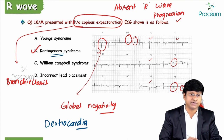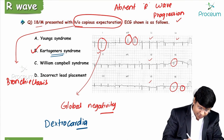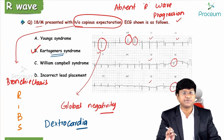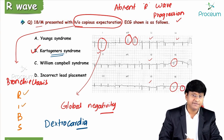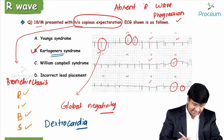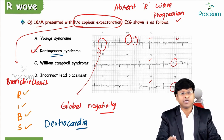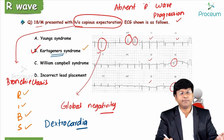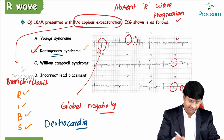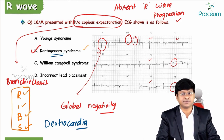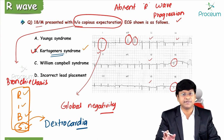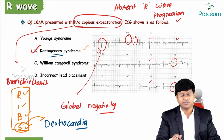Components of Kartagener's syndrome — mnemonic RIBS: R = Rhinosinusitis, I = Infertility, B = Bronchiectasis, S = Situs inversus. Situs inversus is nothing but dextrocardia. Criteria for dextrocardia on ECG: right axis deviation, positive QRS complex in AVR (dominant R wave), global negativity in lead I, and absent R wave progression in the chest leads.